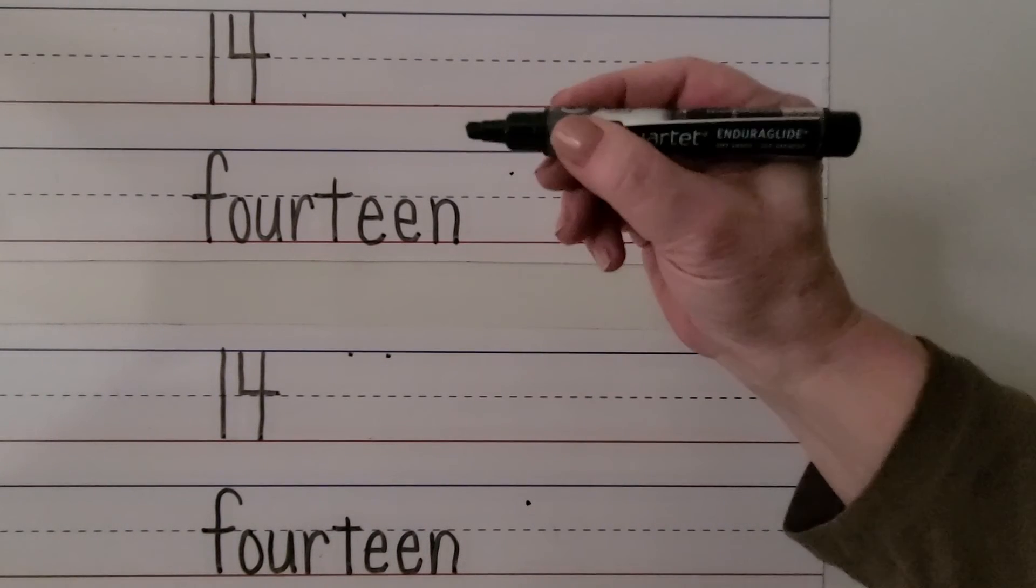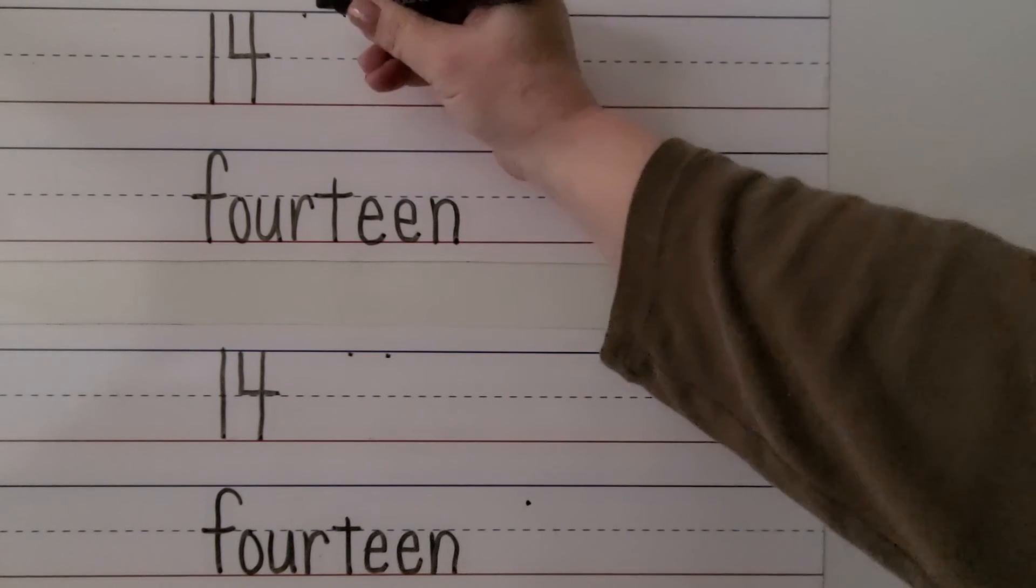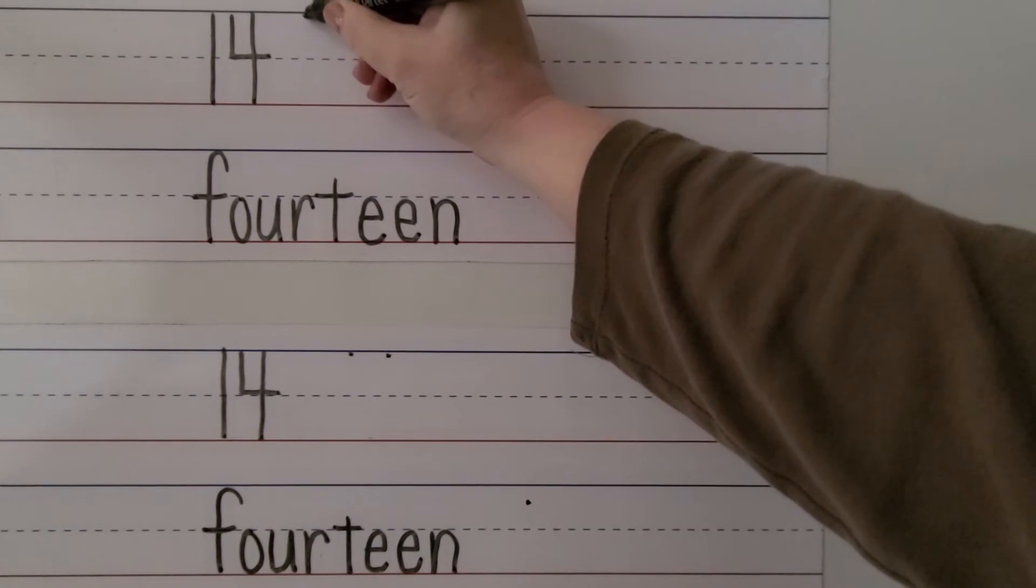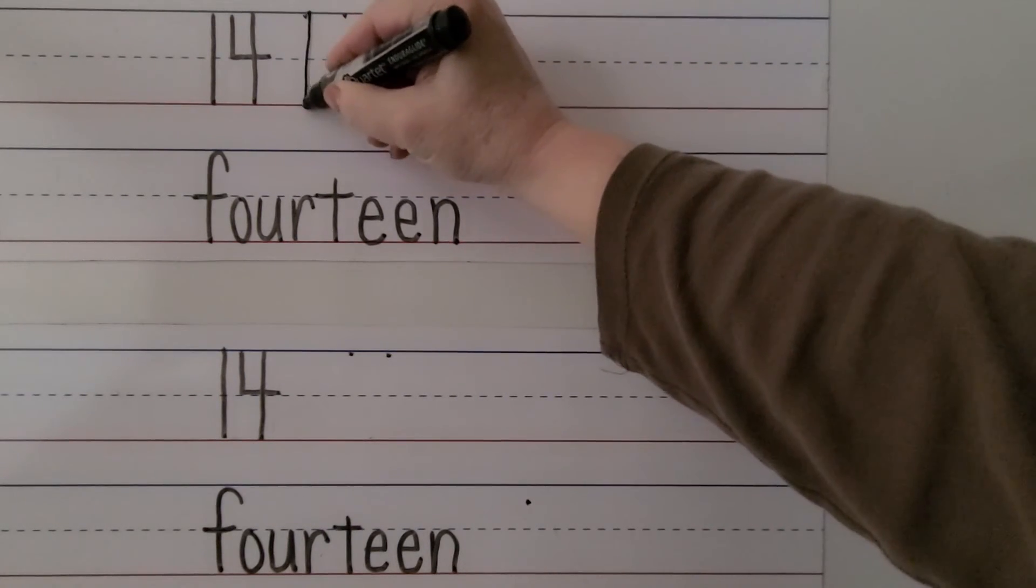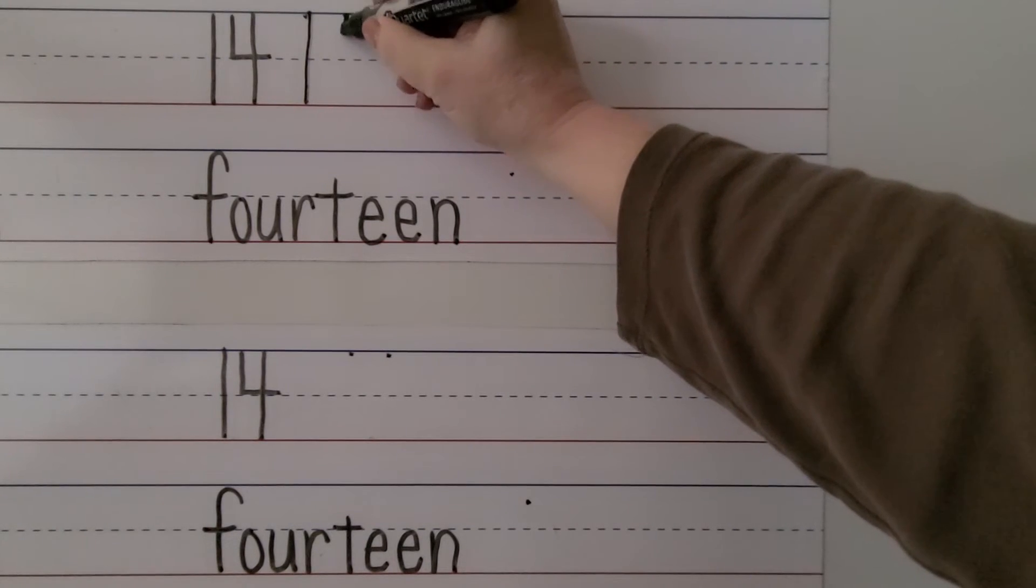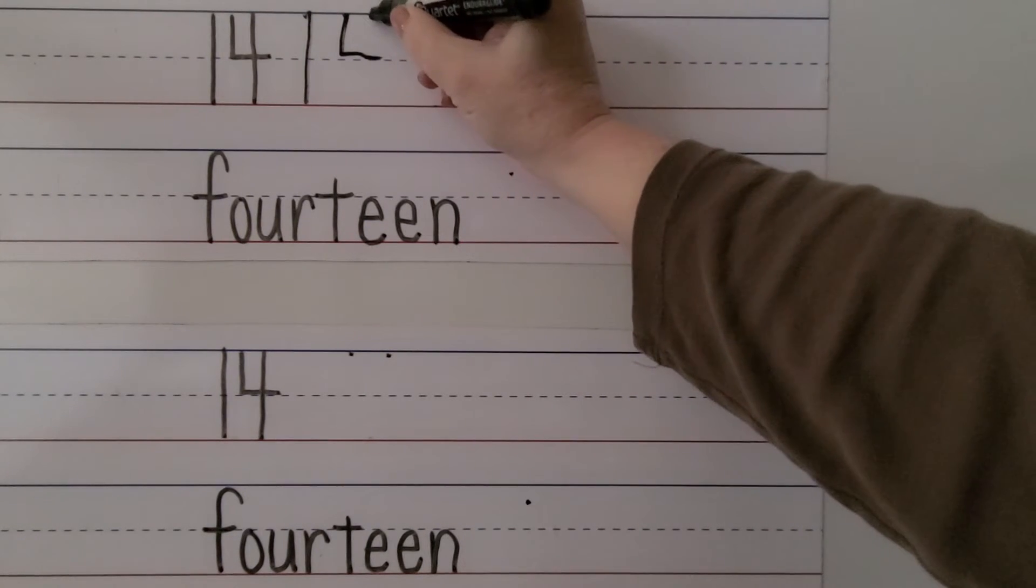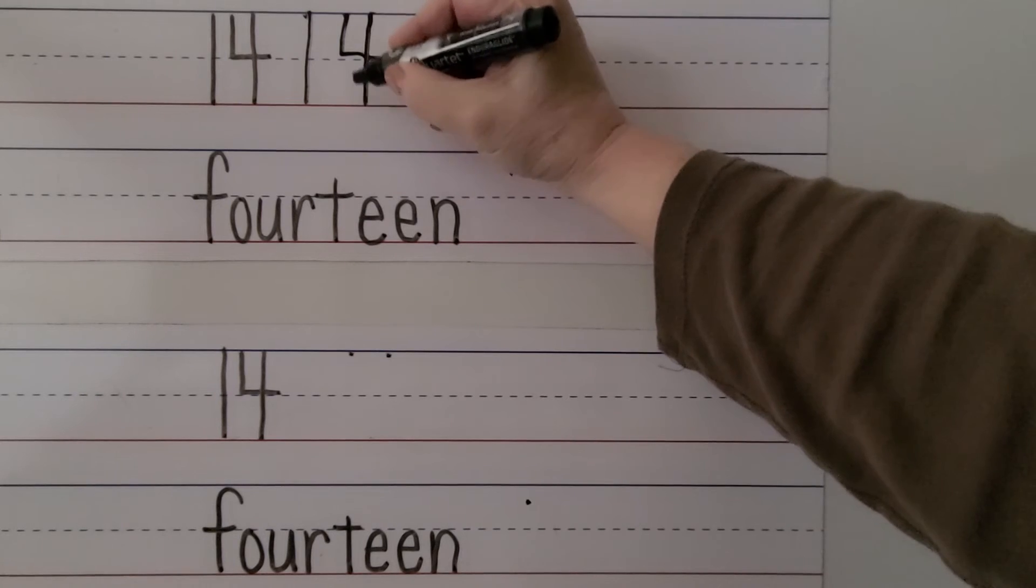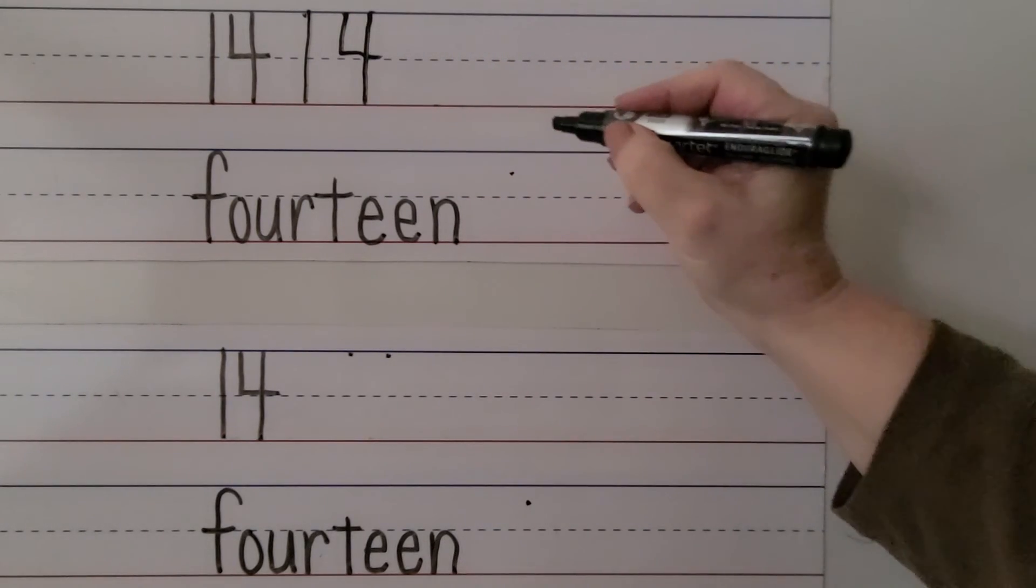We can write the number 14 with our right hand. We start at the top and make a 1 coming straight down. We make our 4. The 1 and 4 next to each other makes the number 14.